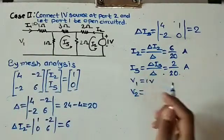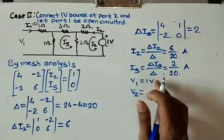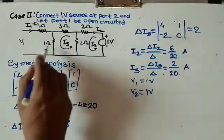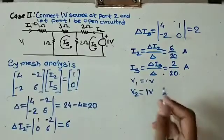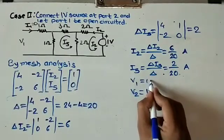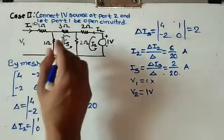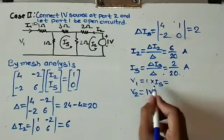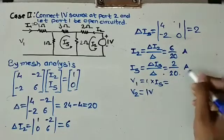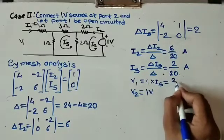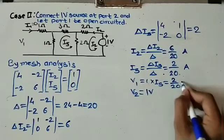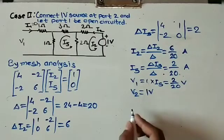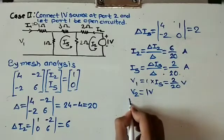Now v2 is 1 volt (the applied source) and v1 is the voltage across the 1-ohm resistor, which equals 1 ohm × i5 = 1 × (2/20) = 2/20 volts. So h12 equals v1 over v2 with i1 equals 0 (port 1 open-circuited), giving h12 equals (2/20) / 1 = 1/10. Since it is a voltage ratio, it has no unit.